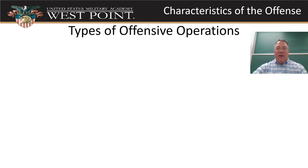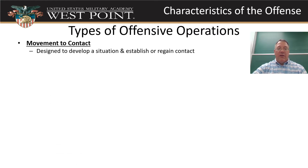There are four types of offensive operations we can conduct. Movement to contact is how we develop the situation — we find out where the enemy is, make contact with them, and either break contact or maintain it for some following reason.